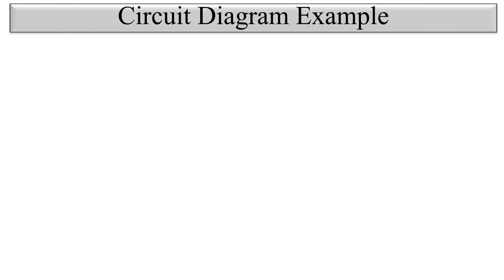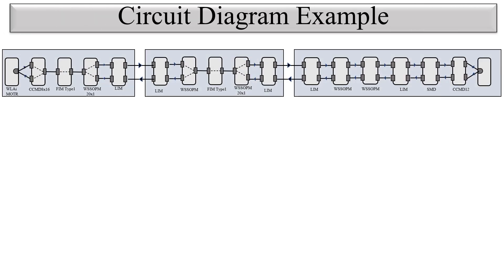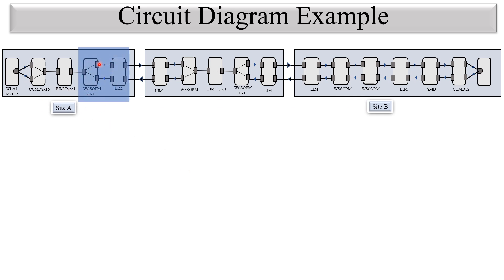Let's see the circuit diagram example which I have taken as a reference to explain the connectivity about WSH and limb. I have taken this circuit diagram as a reference — this is a complete DWDM signal flow from one end to another end, having all the DWDM equipment necessary for this circuit. You can see here this is Site A, this is Site B, and we will focus on this WSH to limb connectivity.